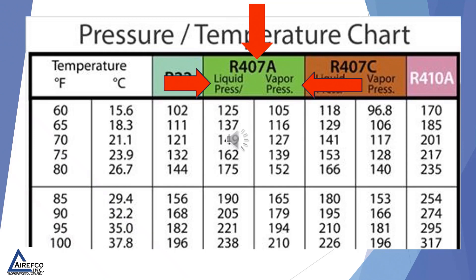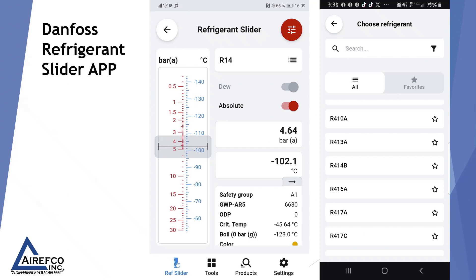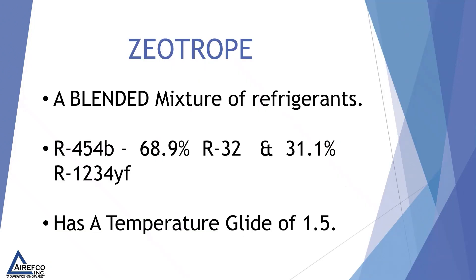One app that is very useful to a technician is the Danfoss refrigerant slider app. This application, which you can download from Danfoss and put on your phone, gives you all the refrigerants right in the palm of your hand. If you don't have a PT chart for the particular refrigerant you're working on, you can choose from the refrigerants loaded into the app and use the slider or type-in process to look at whatever pressure or temperature you need. I recommend that you download it on your phone.